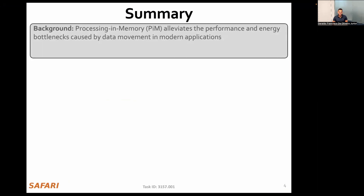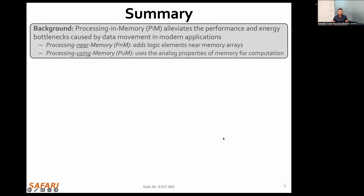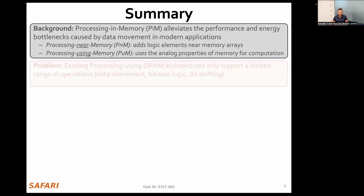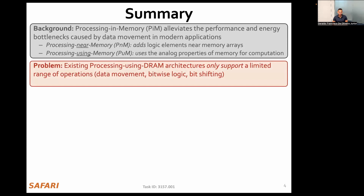A growing number of processing-in-memory architectures have been proposed in recent years to address a growing data movement bottleneck that affects many modern applications. Two important classes of processing-in-memory exist: processing near memory, which adds logic elements near memory arrays, and processing using memory, which uses the analog properties of memory arrays for computation. While processing using memory is adopted by multiple memory technologies, in this talk I will focus on processing using DRAM. Existing processing-using-DRAM architectures provide very high throughput and energy efficiency; however, they only support a limited set of operations, which limits their applicability.